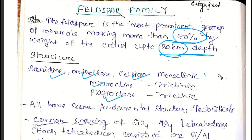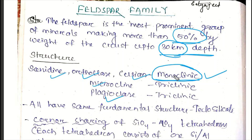We have to study the crystallography of crystal systems: cubic, tetragonal, orthorhombic, hexagonal, monoclinic, and triclinic systems. Most feldspar minerals crystallize in the monoclinic system — Sanidine, Orthoclase, and Celcian — while Microcline belongs to the triclinic system, and Plagioclase also belongs to the triclinic system.